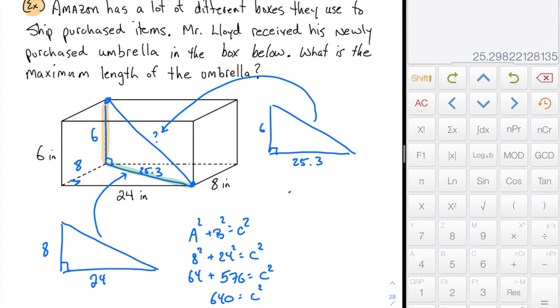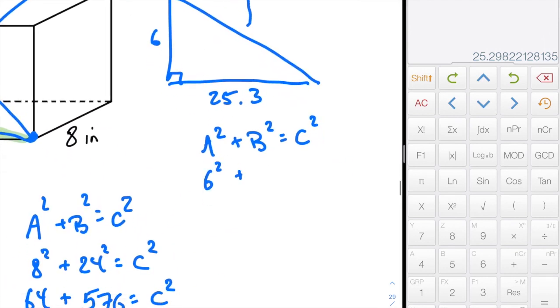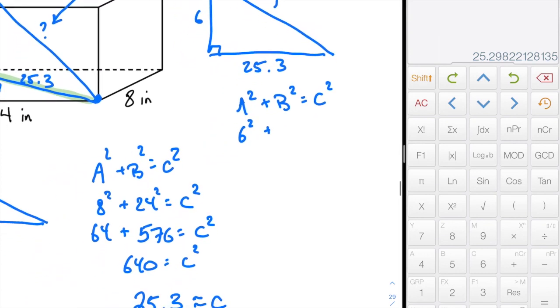So A squared plus B squared equals C squared. 6 squared and, well, look, the 25.3, for what it's worth, the 25.3, if I re-squared it, would be 640. So I'm just going to kind of jump ahead to 640.